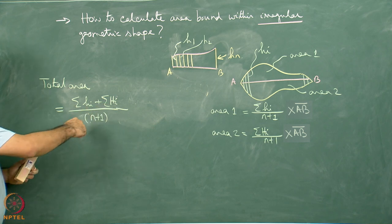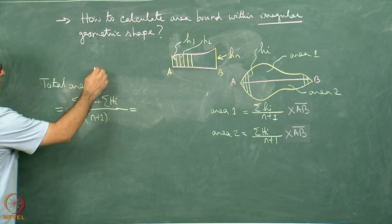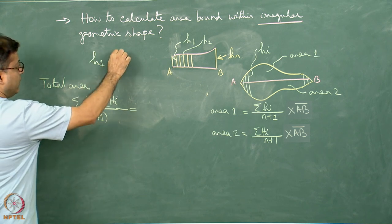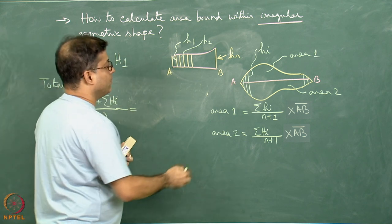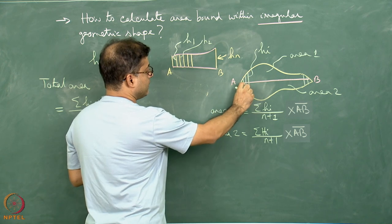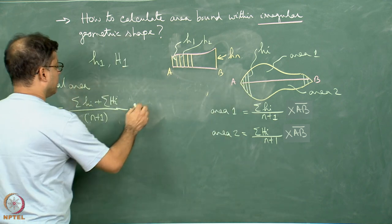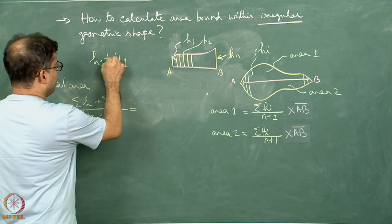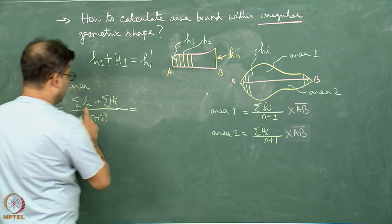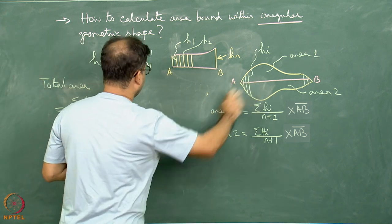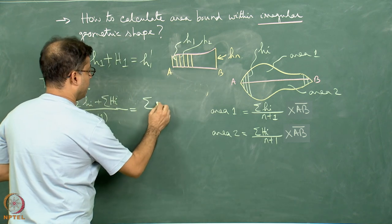So the total area of area 1 and area 2 together will be given by... Take for example, h1 and H1. They are basically the same line, basically the line number 1. So this is the small h1 and this is the capital H1. So if I add up, what will happen? The total height, I can write as, if I add them up, the total height can be written as h1 dash. So in this way, for each of these lines, I keep on adding up the top length and the bottom length.